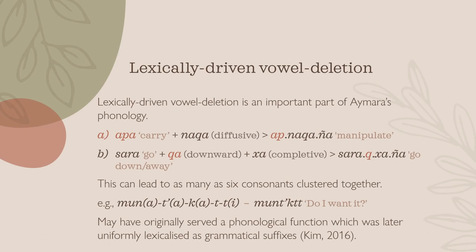Lexically-driven vowel deletion, also referred to as vowel elision within the literature, is an important aspect of phonology in Aymara. This phenomenon can be seen in the example: when a suffix is added to a word, it deletes the vowel at the end of the word, as can be seen in the case of appa changing into ap once the suffix naka is added, as well as ka changing to ku when the suffix ka is appended. The process of deleting vowels can result in consonant clusters of as many as six consonants in a row. Kim believes that this vowel elision may have originally served a phonological function, and was later uniformly lexicalized as a grammatical function of suffixes.